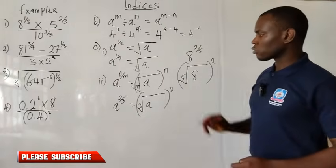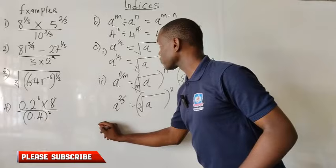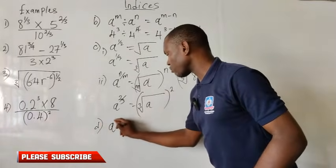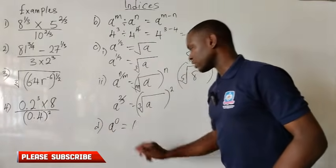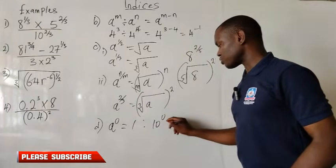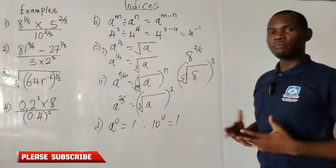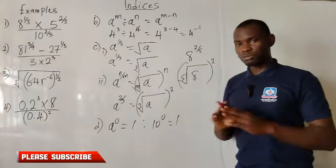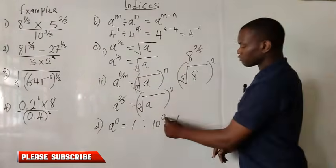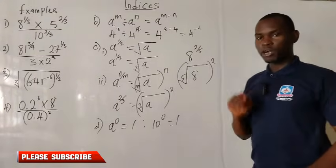Let's consider another law — the zero index law, which should be the fourth law. Each time you have a number raised to the power of 0, that equals 1. For example, 10 raised to the power of 0 equals 1. For every number — whether 101, 230, or 0.5 — raised to the power of 0, the value is equivalent to 1.